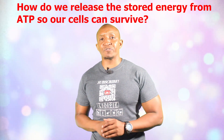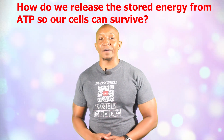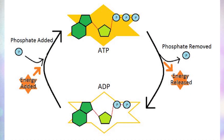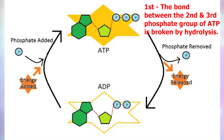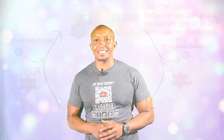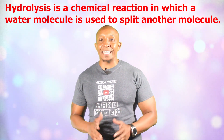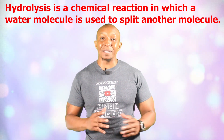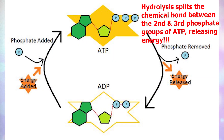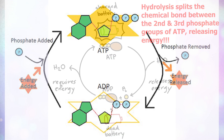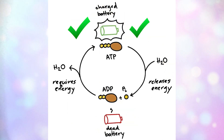So how do we release the stored energy from ATP so our cells can survive? When our cells need energy, the bond between the second and third phosphate groups of ATP is broken by the process of hydrolysis. Hydrolysis is basically a chemical reaction in which a water molecule is used to split another molecule. In this case, hydrolysis splits the chemical bond between the second and third phosphate groups of ATP, which releases the chemical energy in the bonds. Think of ATP as a fully charged battery.